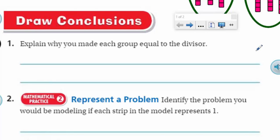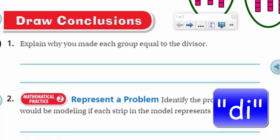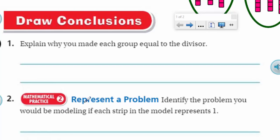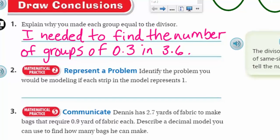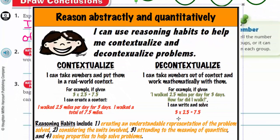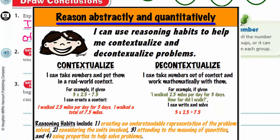Now it says draw a conclusion — explain why you made each group equal to the divisor. I did that because I needed to find the number of groups of three-tenths in three and six-tenths. We have mathematical practice two here: reason abstractly and quantitatively. This is about contextualizing and decontextualizing problems — meaning I could take a number sentence and make a problem based on that, and then do the opposite. Our number sentence stated that three and six-tenths divided by three-tenths was equal to 12. So we decontextualize and contextualize problems.